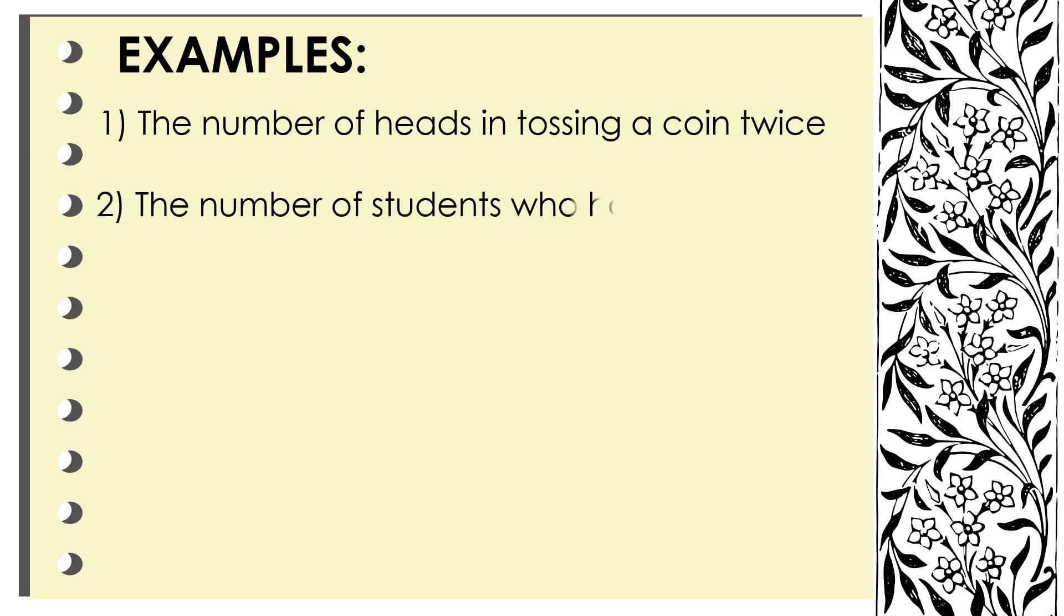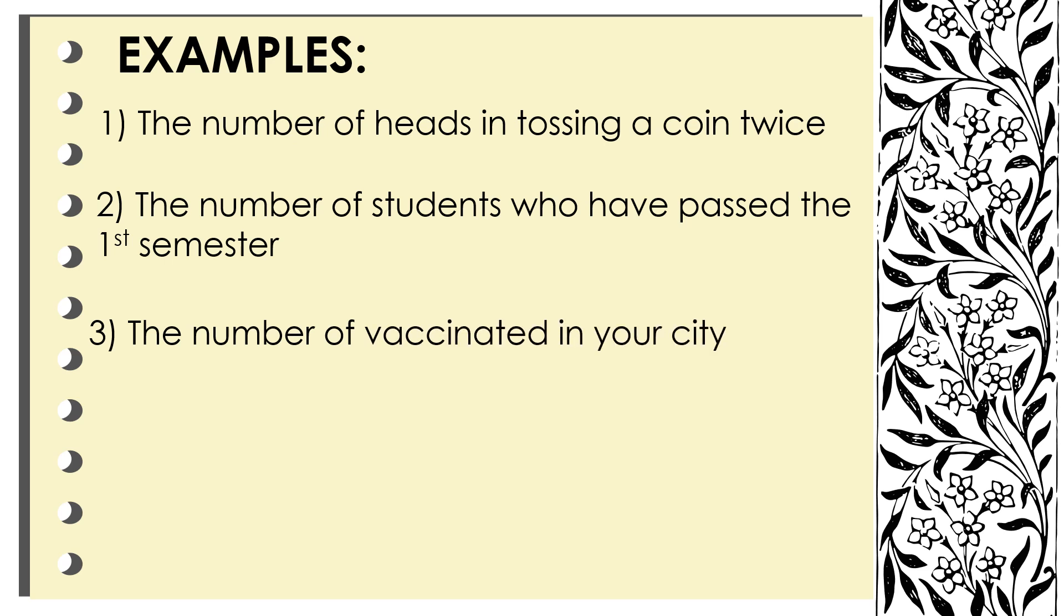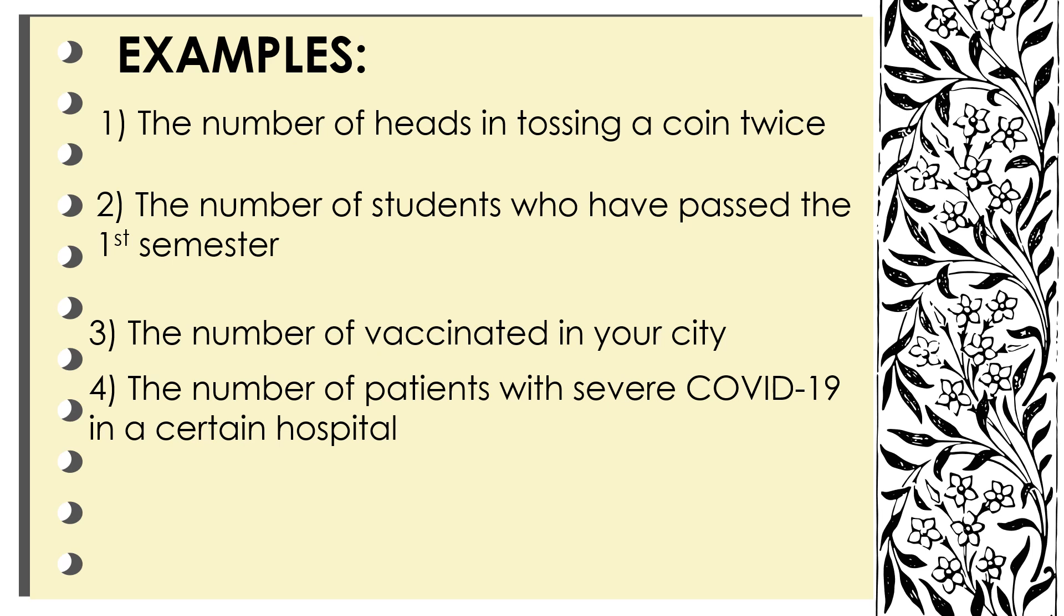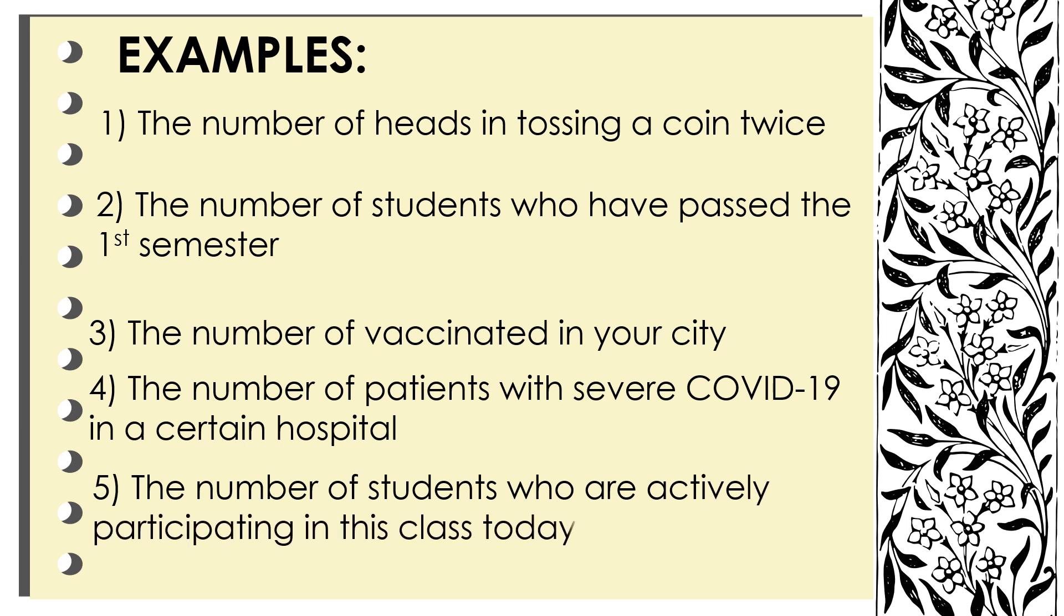Examples. Number one, the number of heads in tossing a coin twice. Number two, the number of students who have passed the first semester. Number three, the number of vaccinated in your city. Number four, the number of severe patients with COVID-19 in a certain hospital. Number five, the number of students who are actively participating in our class today. Meaning, we can visibly count the number of heads or tails in tossing a coin, and we can count the number of students who have passed the first semester, the number of persons who are vaccinated in your city, and the number of students. So these are called the discrete random variables. These are any event or situation or anything that can be counted.